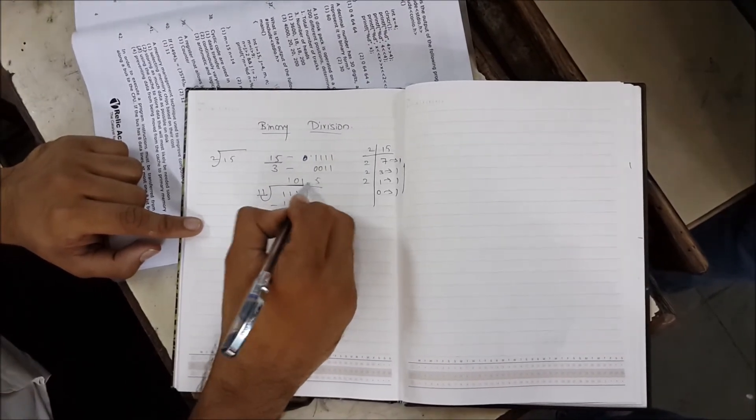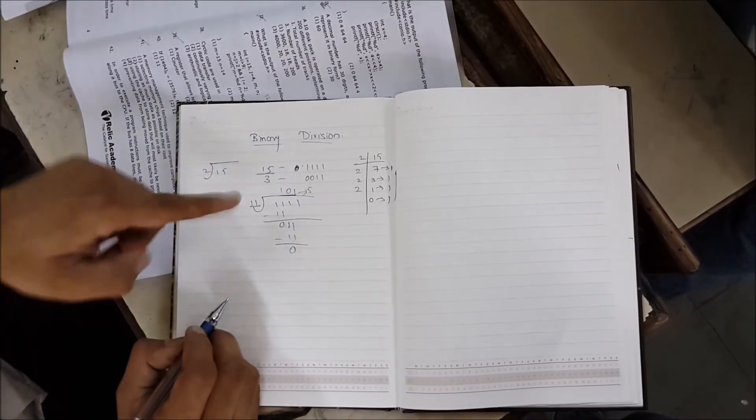So 101 in binary is 5. 15 divided by 3 equals 5. That completes the calculation.